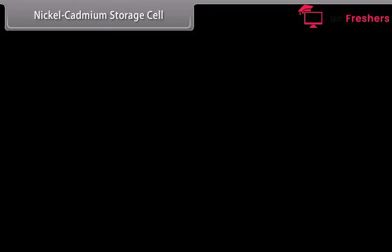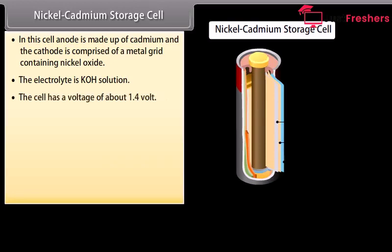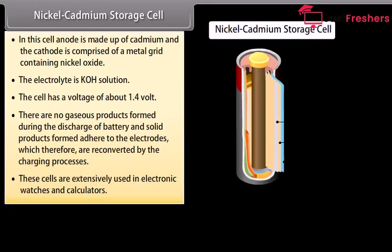Nickel cadmium storage cell. In this cell, anode is made up of cadmium and the cathode is comprised of a metal grid containing nickel oxide. The electrolyte is KOH solution. The cell has a voltage of about 1.4 volts. There are no gaseous products formed during the discharge of battery and solid products formed adhere to the electrodes which therefore are reconverted by the charging processes. These cells are extensively used in electronic watches and calculators.